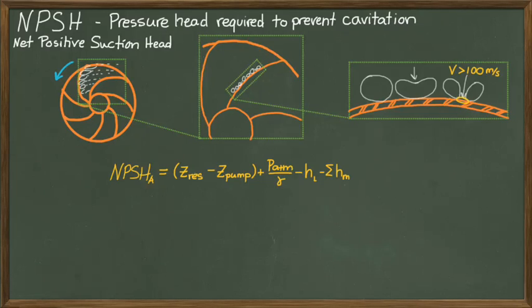We must also account for all friction and minor losses between the reservoir and the pump suction. Finally, we must also account for the vapor pressure head of the fluid itself, which is a function of the temperature of the fluid.